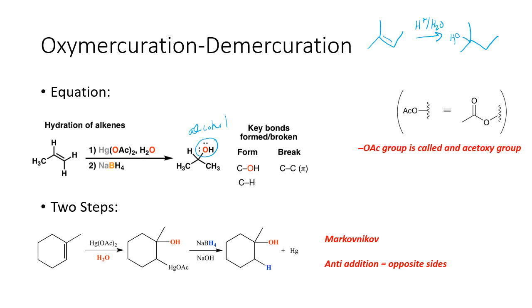Both acid-catalyzed hydration and oxymercuration-demercuration can technically give you the same product. However, acid-catalyzed hydration leads to methyl rearrangements and hydride rearrangements, so you don't always get the product you'd expect. Oxymercuration-demercuration does not undergo those pesky rearrangements, making it a better way to get the actual product you're expecting. We won't spend much time on rearrangements in this class.